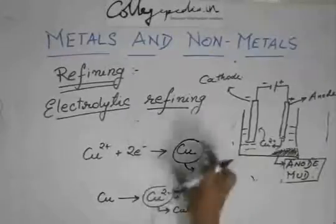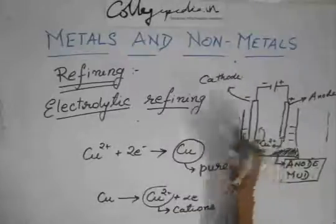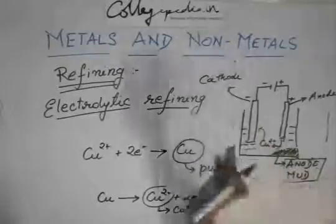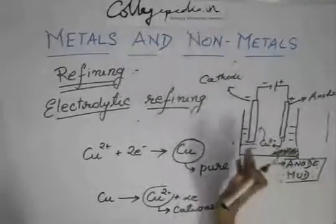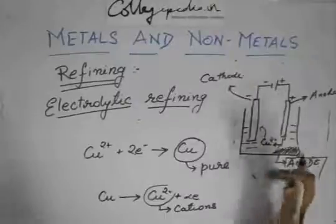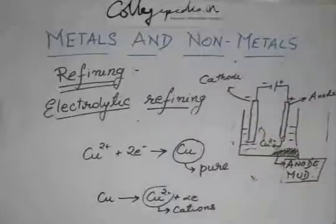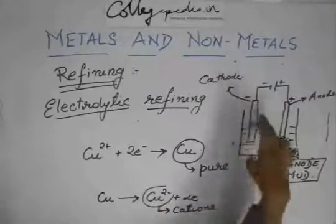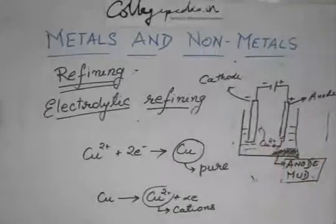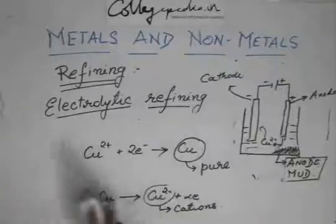What remains is just the pure metal which gets deposited on the cathode. The cathode is already a thin strip of pure metal, so pure metal gets more and more deposited there, while the anode is taken into the solution. This way we obtain pure copper from impure copper.